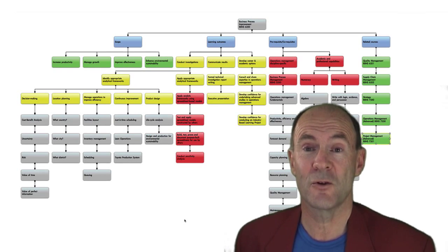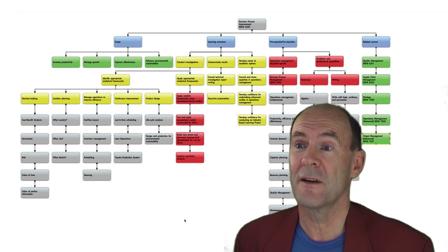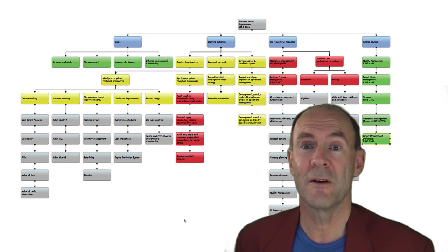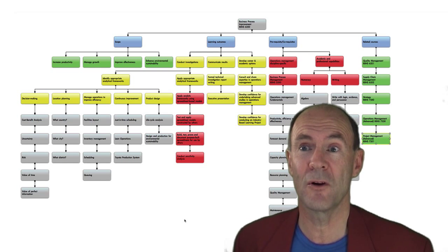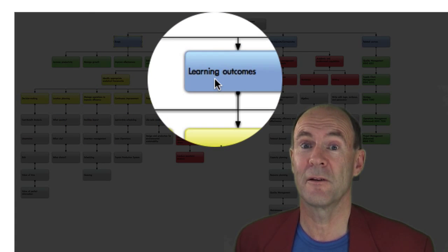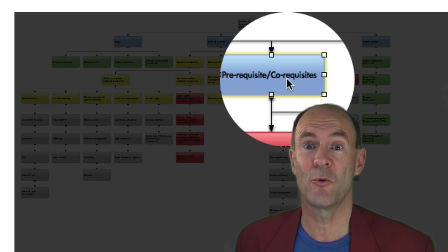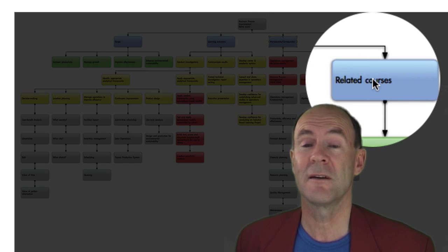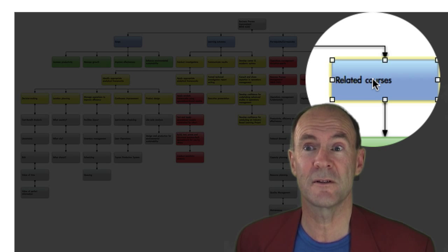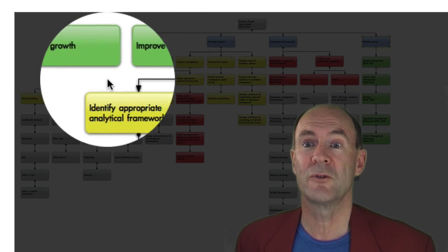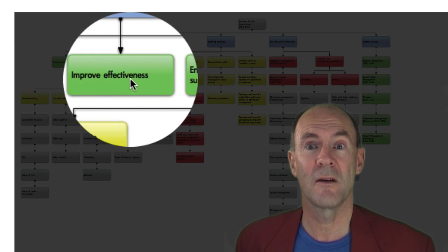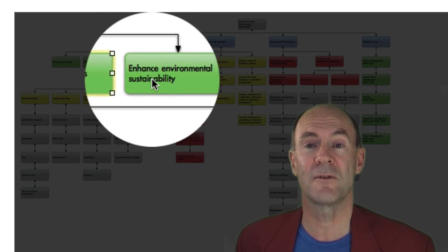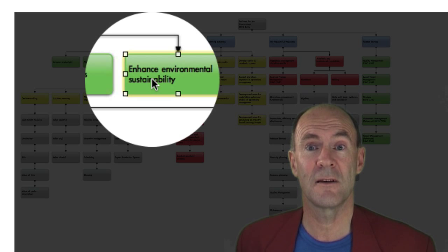We've conducted our tour of the course and here you see now the full mind map covering all the different aspects of the course. The scope, the learning outcomes, the prerequisites and co-requisites and the related courses. We've shown how the scope concerns increasing productivity, managing growth, improving enterprise effectiveness and enhancing the environmental sustainability of an organisation.